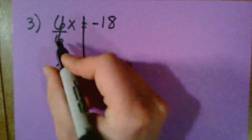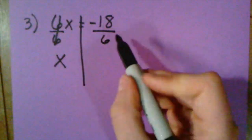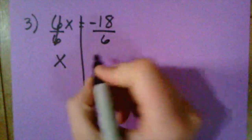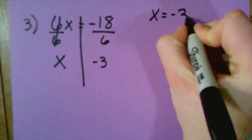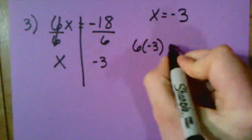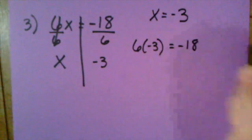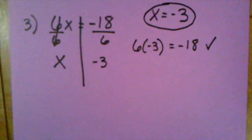And the golden rule says because I divide by 6 on that side, I also have to divide by 6 on this side. Negative 18 divided by 6 is going to be negative 3. So X would equal negative 3. And I can check my answer by taking 6 times negative 3 and seeing if that equals negative 18. And it does, so I know that X is equal to negative 3 for this problem.